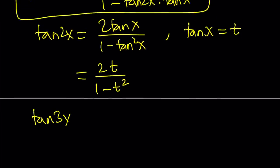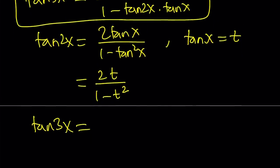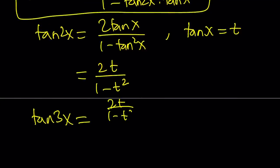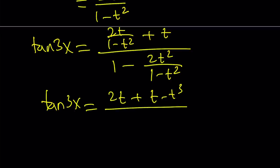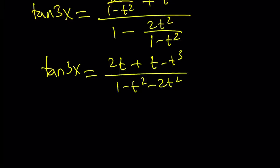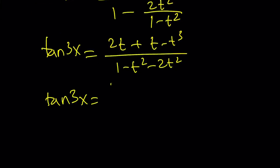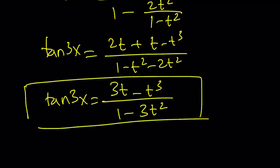Tangent 2x becomes 2t divided by 1 minus t squared. And if you replace tangent 2x with that in this equation we get a formula for tangent 3x in terms of t. Tangent 3x, I'm going to replace tangent 2x with 2t over 1 minus t squared. And tangent x is obviously just t divided by 1 minus, if you multiply those together you get 2t squared divided by 1 minus t squared. And if you make a common denominator and forget about the denominators because they are the same, you get 2t plus t minus t cubed divided by 1 minus t squared minus 2t squared. And from here tangent 3x becomes 3t minus t cubed divided by 1 minus 3t squared where t is equal to tangent x. So that's the formula we just derived it.